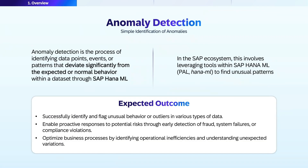Anomaly detection is the process of identifying data points, events, or patterns that deviate significantly from expected behavior within datasets. In the SAP ecosystem, this involves leveraging SAP HANA ML tools, specifically the Predictive Analysis Library and HANA ML. The expected outcomes include successfully identifying unusual behavior or outliers in various data types, enabling proactive responses to potential risks through early detection, and optimizing business processes by identifying inefficiencies and unexpected variations.